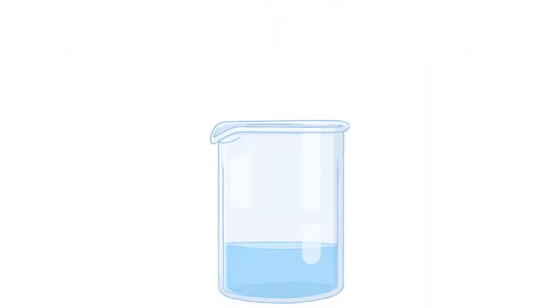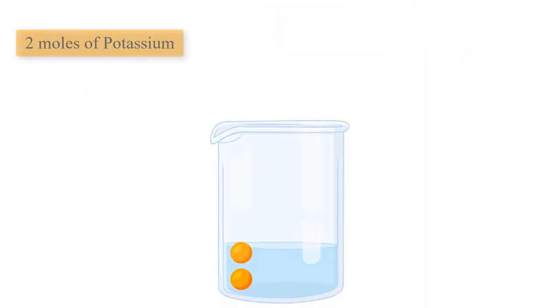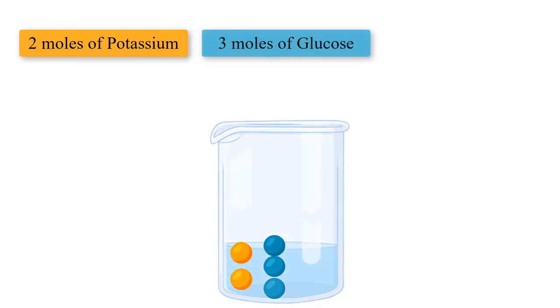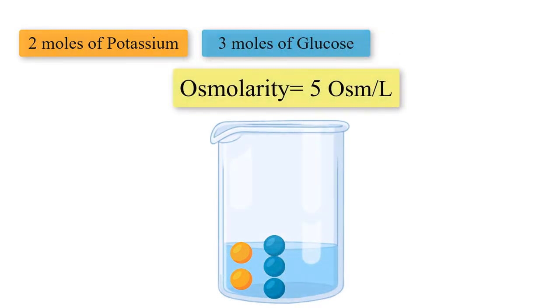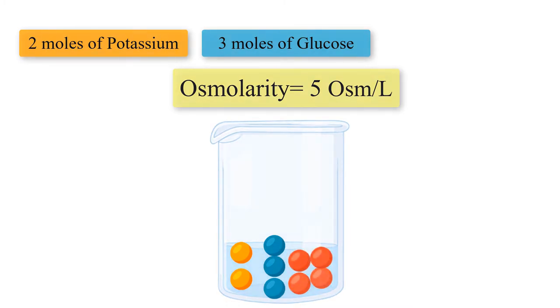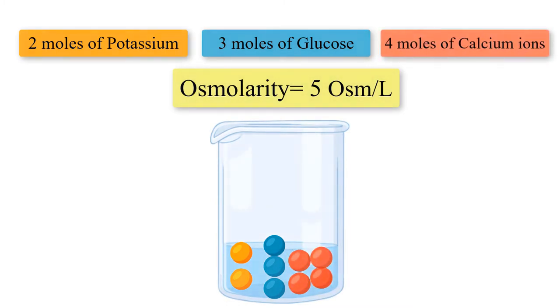Osmotically active particles are the particles in the solution that are not water. Put another way, osmolarity is the molarity of anything in the solution that is not water. For example, if a solution contained two moles of potassium ions and three moles of glucose, the osmolarity would be five osmoles per liter. If four moles of calcium ions were added to the same solution, the osmolarity would increase to nine osmoles per liter.